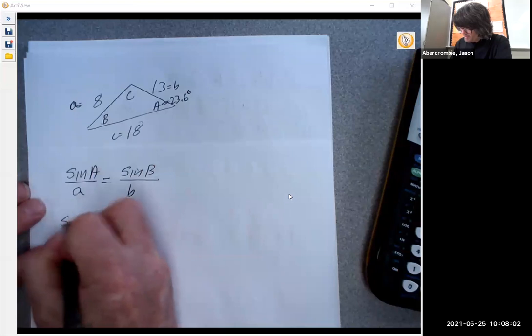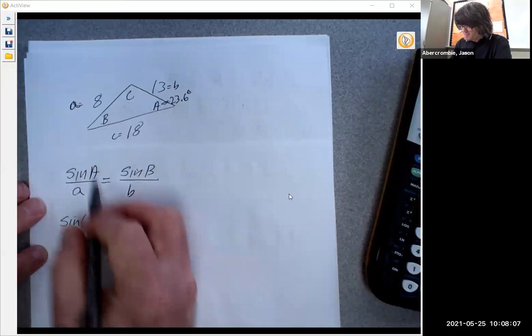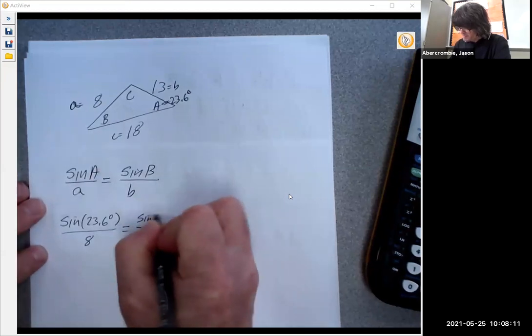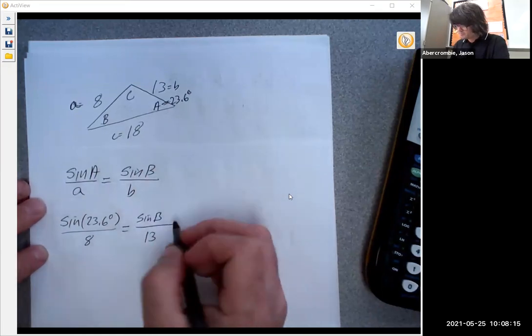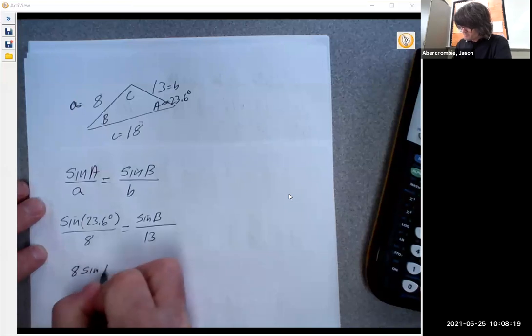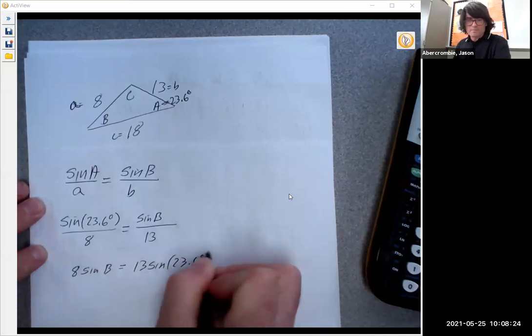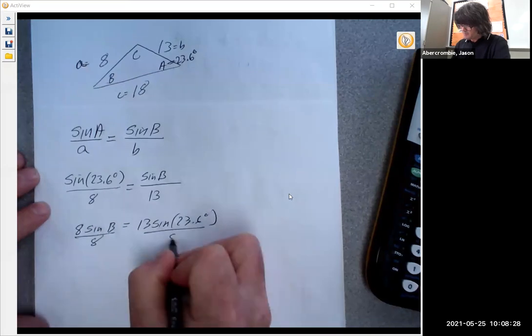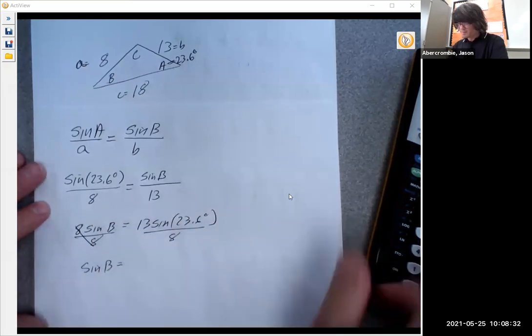So I'll do maybe sine of 23.6 over A, which is 8, equals the unknown angle sine B over side B, which is 13. So 8 sine B equals that, divide by 8, and you get sine B equals this number.